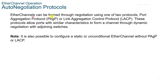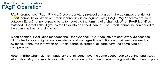Now the auto-negotiation protocols. EtherChannels can be formed through negotiation using one of two protocols: Port Aggregation Protocol (PAGP) or Link Aggregation Control Protocol (LACP). These protocols allow ports with similar characteristics to form a channel through dynamic negotiation with adjoining switches. It's also possible to configure a static or unconditional EtherChannel without PAGP or LACP. PAGP is a Cisco proprietary protocol that aids in the automatic creation of EtherChannels. PAGP packets are sent between EtherChannel-capable ports to negotiate the forming of a channel. When PAGP identifies matched Ethernet links, it groups the links into an EtherChannel, which is then added to the spanning tree as a single port. When enabled, PAGP also manages the EtherChannel.